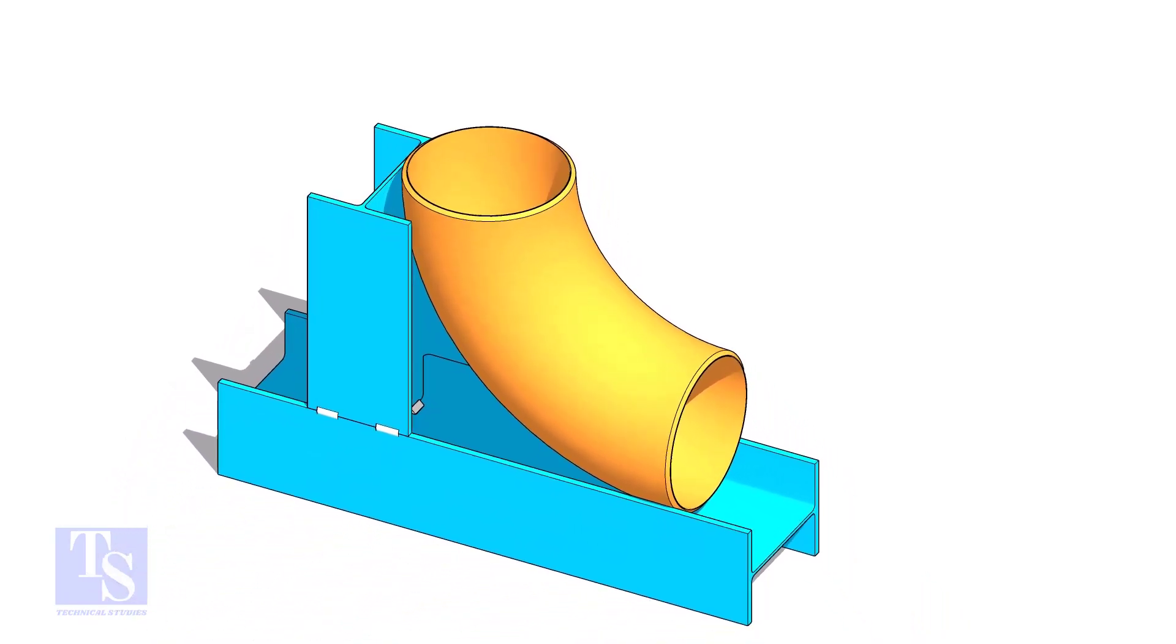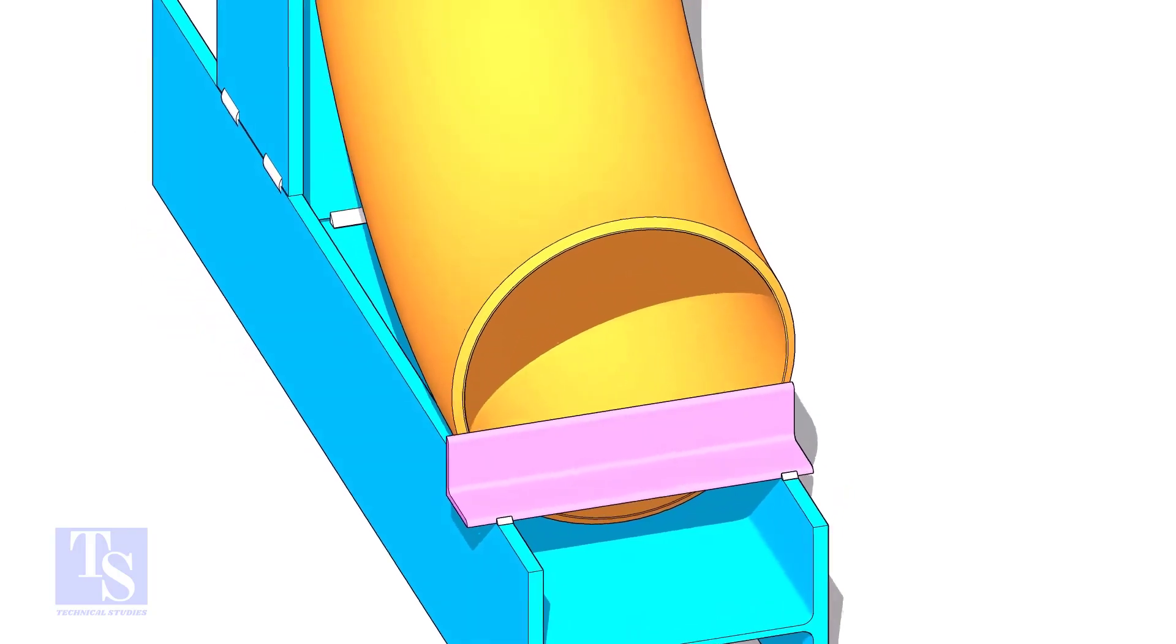Tack weld a piece of angle bar or a piece of a plate at the bottom side of the jig to arrest the elbow.